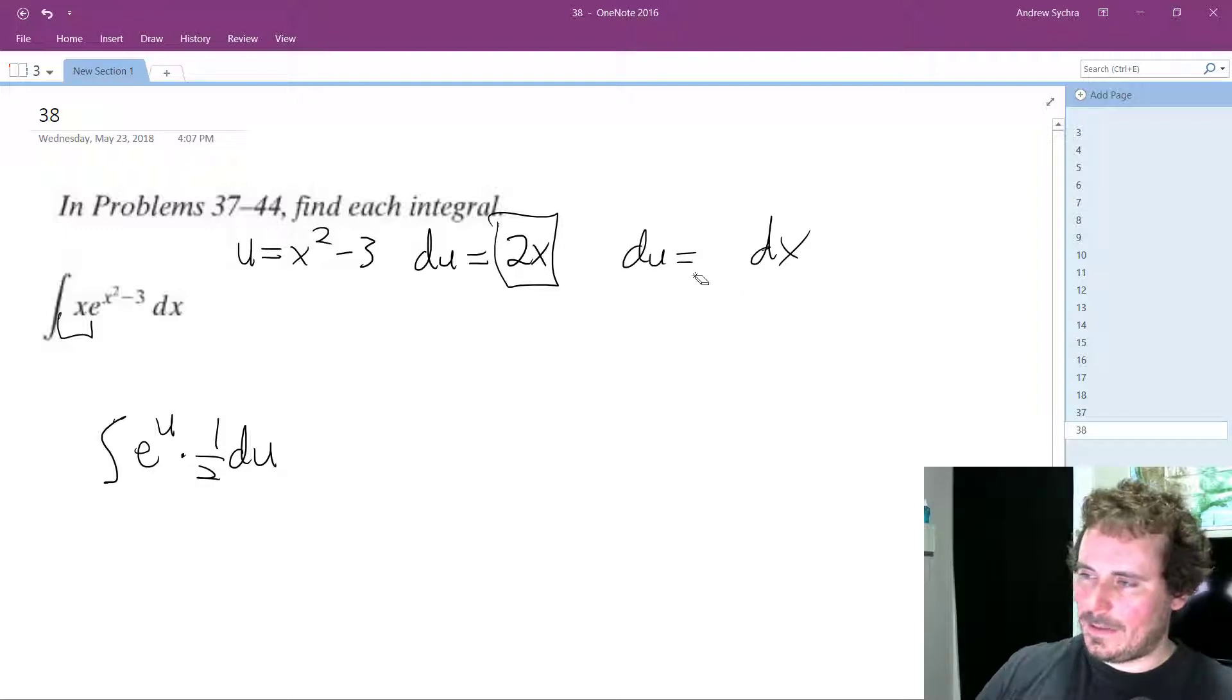I'm going to take this back, this should be 1 half. Okay, so moving this out in front, so I get 1 half, then the integral of e raised to the u du.